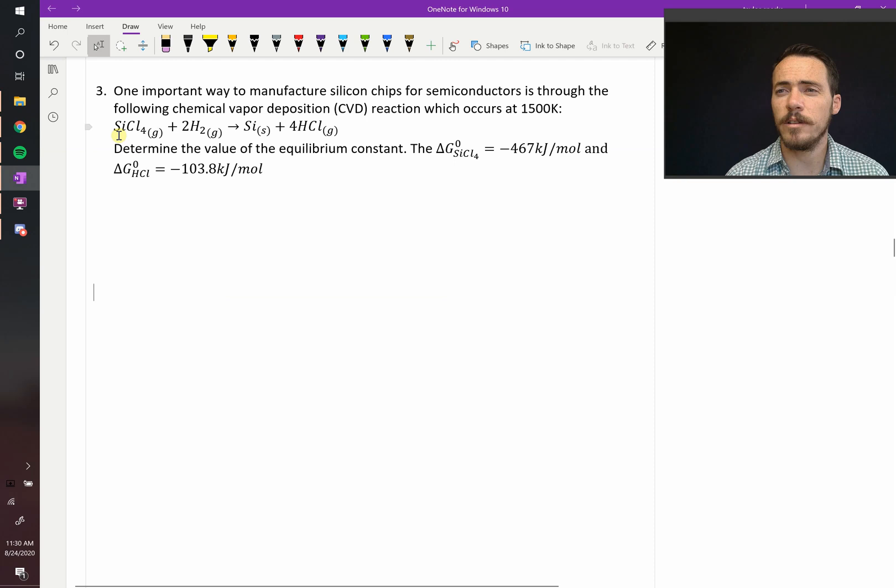What they start with is silicon tetrachloride, SiCl₄, that's a gas. They react it with hydrogen to form silicon and hydrochloric gas, HCl. In this process, we are asked the following.